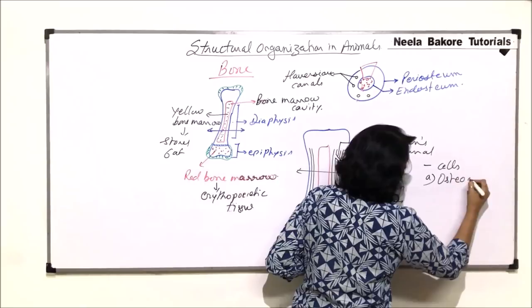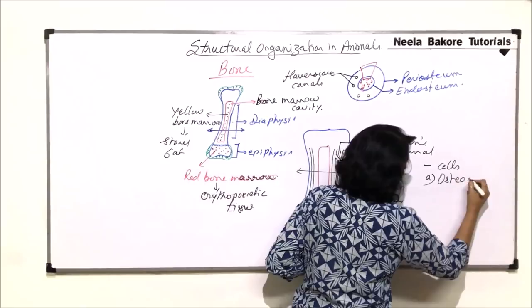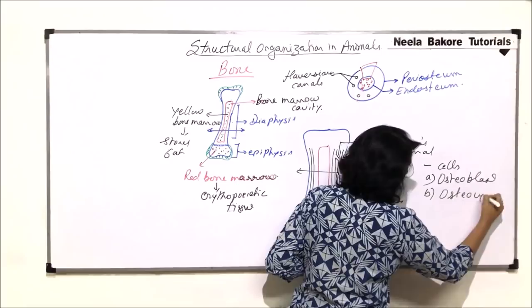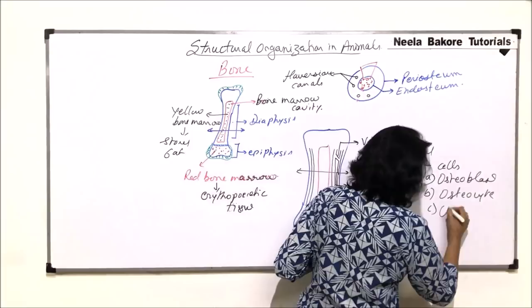There are different types of cells. The first is known as osteoblast. Then, the second type is known as osteocyte. We also find one more cell, which is called osteoclast.